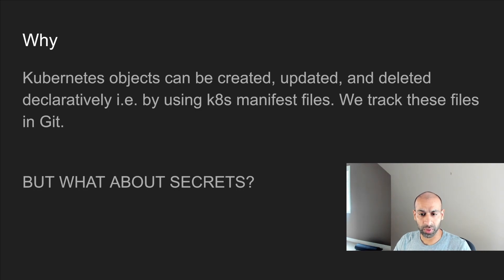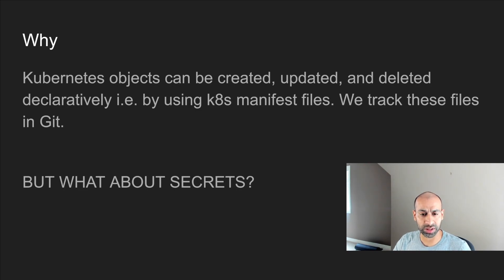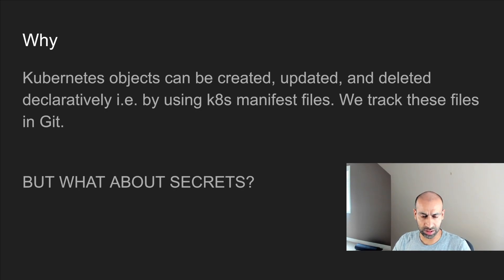We want a safe way to use secrets declaratively — meaning have them checked into our git repository — and we also want a safe way so that even if those keys are shared with anyone, nobody could get the actual decrypted value of that secret. This is exactly what sealed secrets help us with.